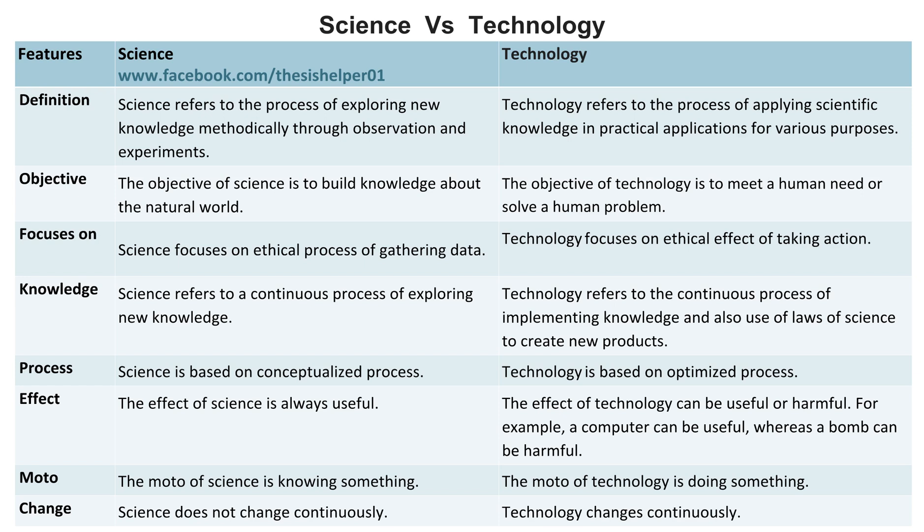The objective of science is to build knowledge about the natural world, whereas the objective of technology is to meet a human need or solve a human problem.